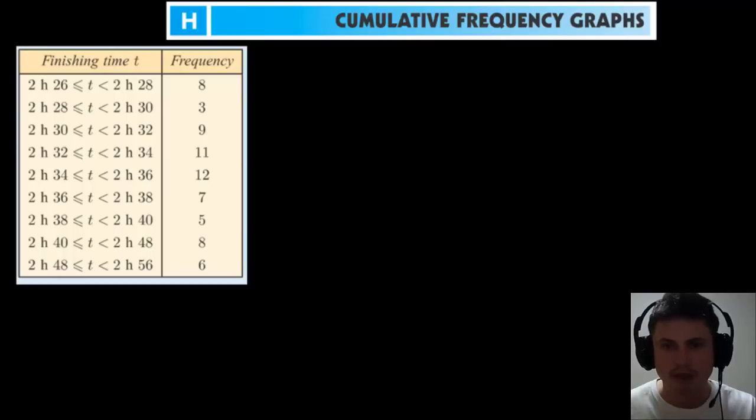And it's an example about marathon runners. So here we have finishing time of different marathon runners between two hours and 26 minutes and two hours and 56 minutes. And this is the frequency of how many finished at what time. So for example, we have eight runners that finished between 2:26 and 2:28, three runners that finished between 2:28 and 2:30 and so on.